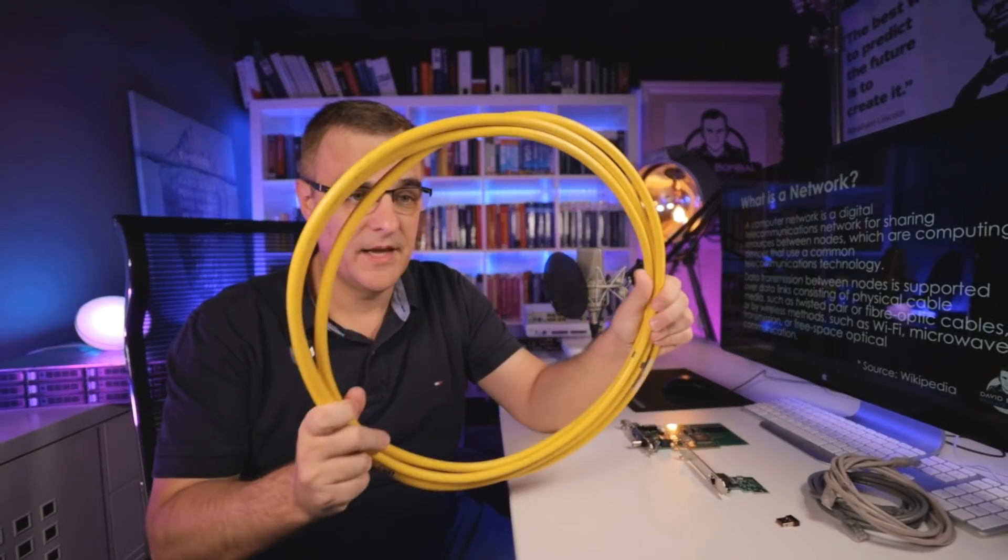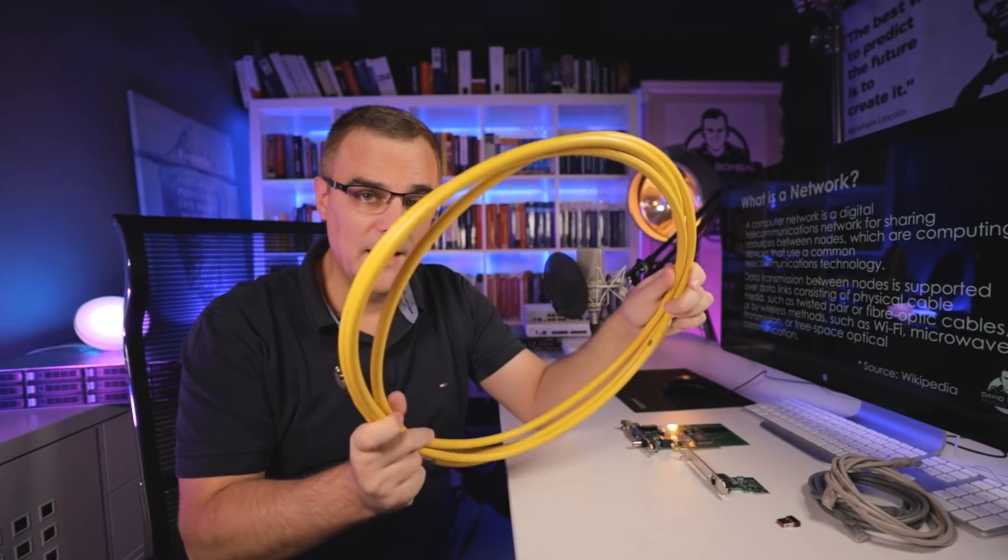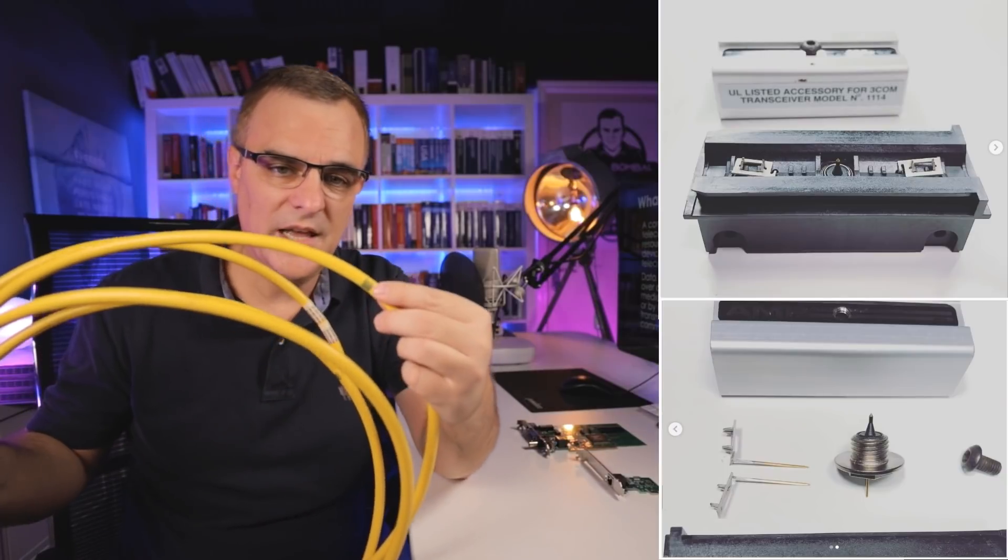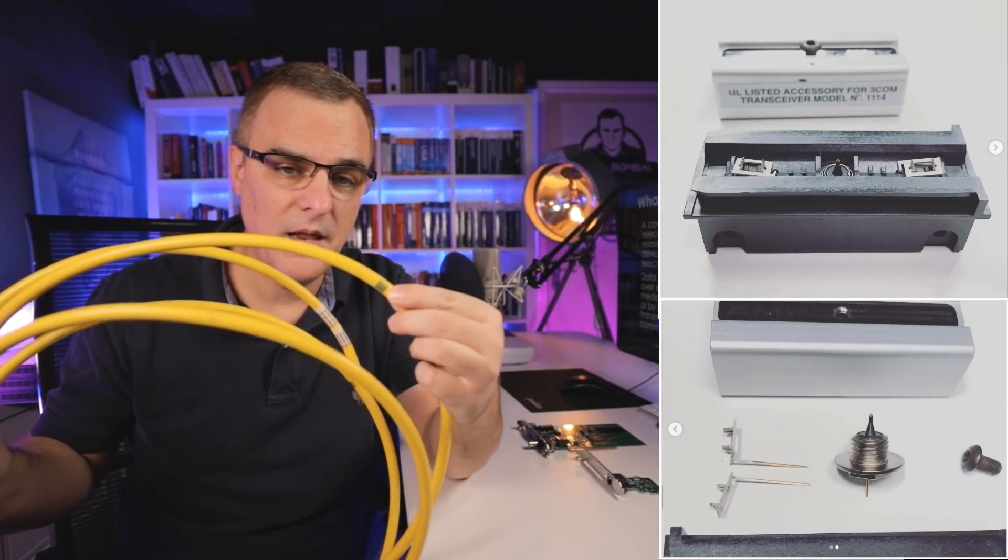Now ethernet, it didn't start with unshielded twisted pair cabling. It started with 10 base 5 cabling, very big cabling. This not easy to use. It actually has these black markings on the cable,